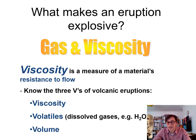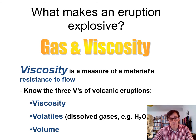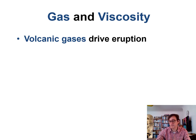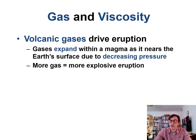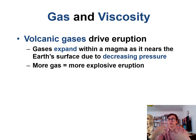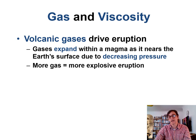Volatiles are dissolved gases — common ones are water vapor (H₂O) and carbon dioxide (CO₂). Volume refers to how large a magma chamber we're dealing with. Volcanic gases are released once the lava/magma reaches the surface — that's what drives the eruption. Gases expand within magma as it nears the Earth's surface due to decreasing pressure. Think of a carbonated water bottle: unscrew the cap, especially if shaken, and it all froths out — the same principle. More gas within the lava means a more explosive eruption.